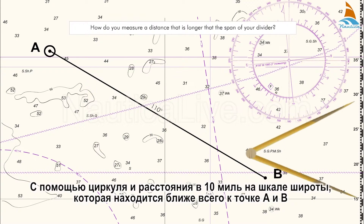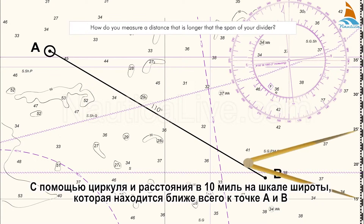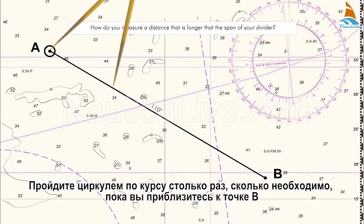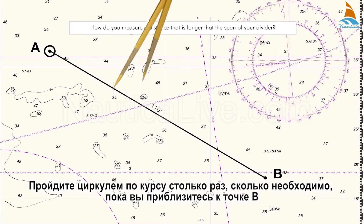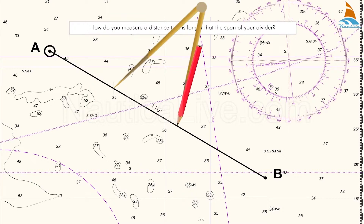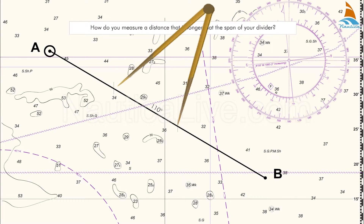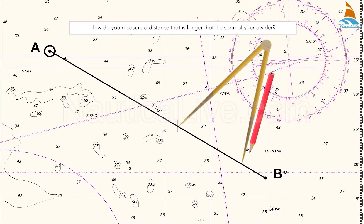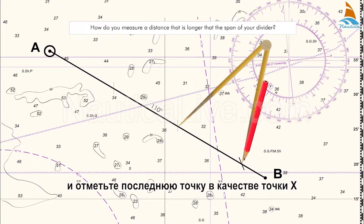Use the dividers and span a distance of 10 miles on the latitude scale which is closest to point A and B. Walk the dividers along the course as many times as needed until you get close to point B, and mark the last point as point X.